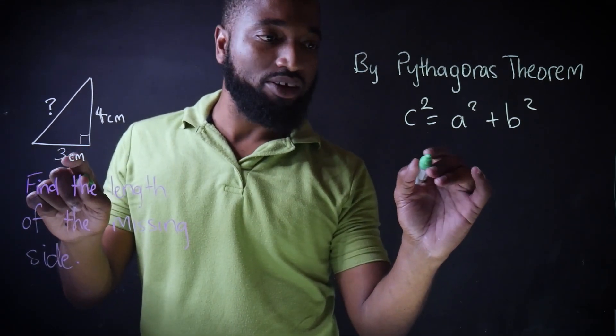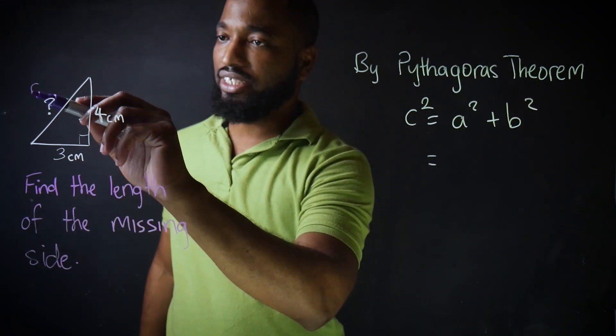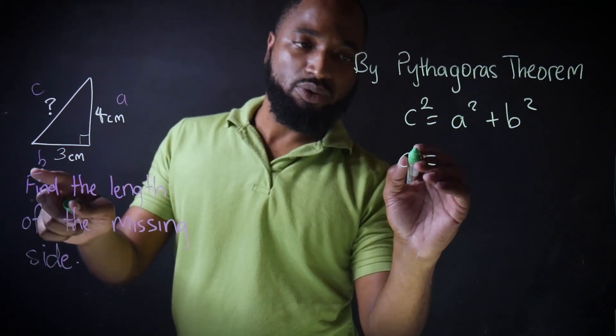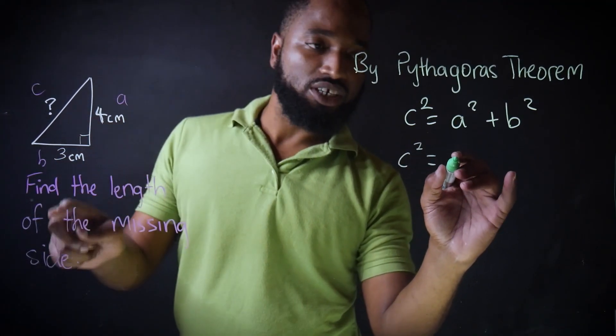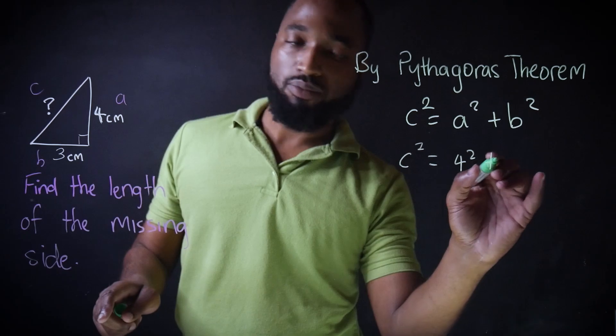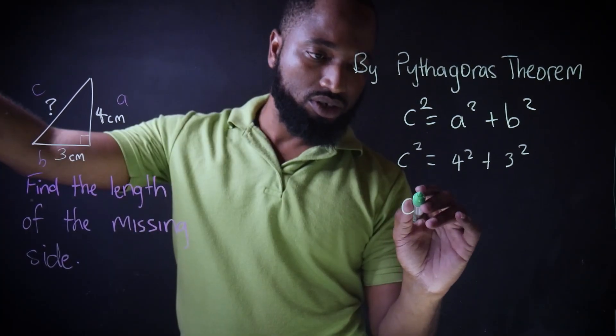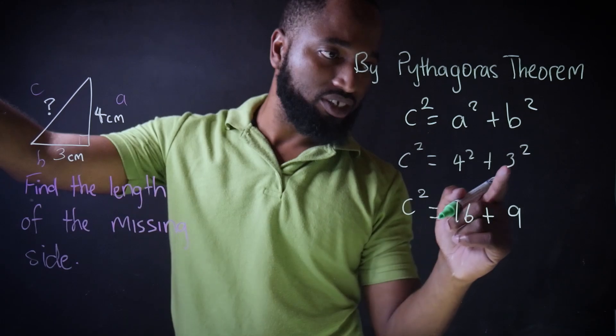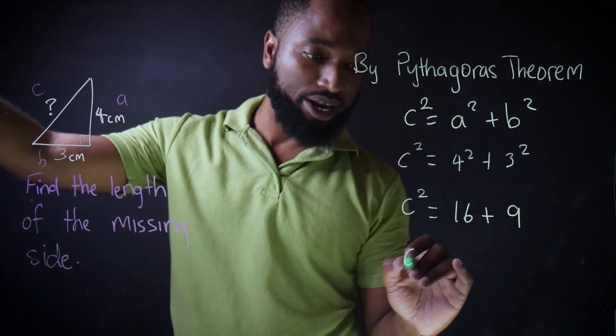Then you substitute your values. It's just important that we get C correct. A and B could be anybody. So C is missing so we'll write C but A and B which are the other two sides, 4 squared plus 3 squared. C squared is equal to 16 plus 9 because 4 by 4 is 16 and 3 by 3 is 9. Then we multiply the number by itself.